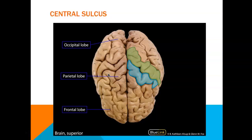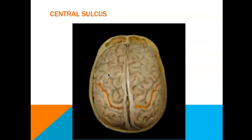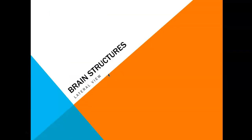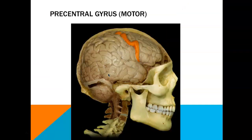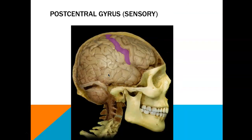The central sulcus is found between these two gyri and helps to separate the two cortices. Here's another view of the central sulcus. Now let's move into a lateral view, where I'll show you what the precentral gyrus and the postcentral gyrus look like from that perspective.